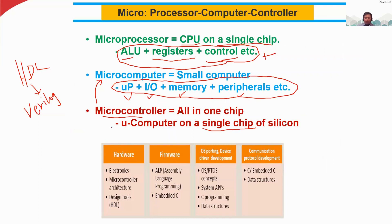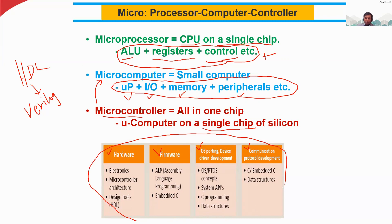Now you have some idea about what a microprocessor and microcontroller are. Here you can see a table covering hardware, firmware, operating system, and communication protocol. From a technical perspective, this table is indicating the entire computer world.